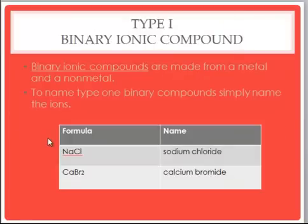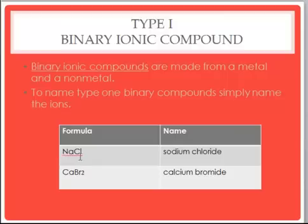Type 1 ionic compounds are made from at least one metal and at least one nonmetal. To name these compounds we simply name the ions they're made from. For example, NaCl — Na is sodium ion, and Cl as an ion is called chloride — so this becomes sodium chloride. The compound below it, Ca is calcium, Br is bromide, becomes calcium bromide. Notice we didn't even mention the two — not necessary — it's simply called calcium bromide.